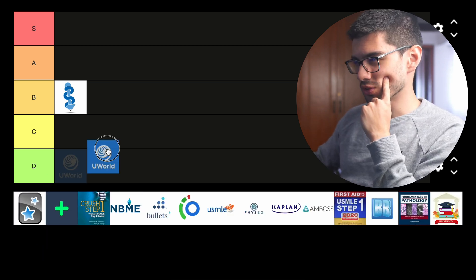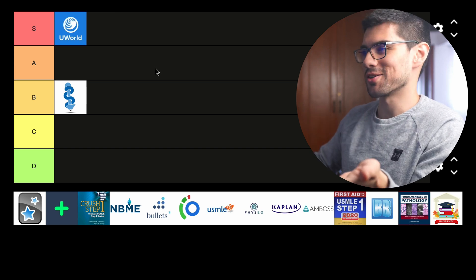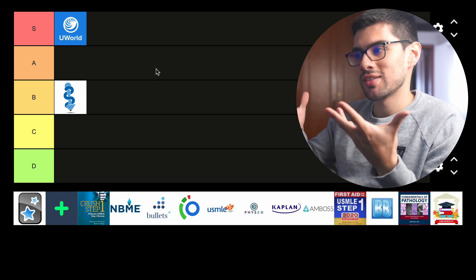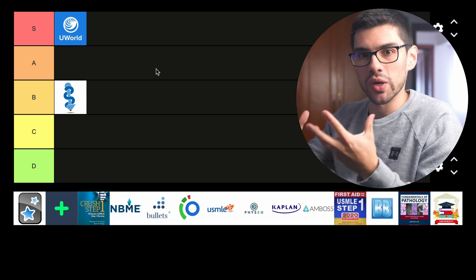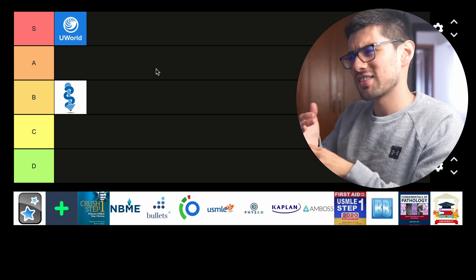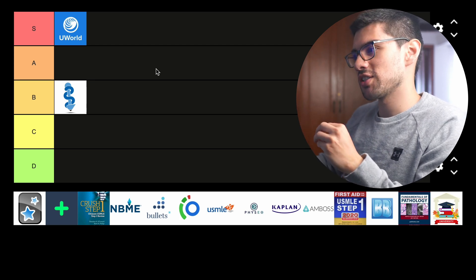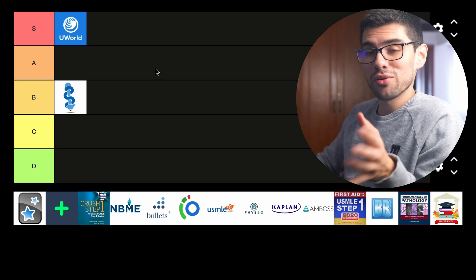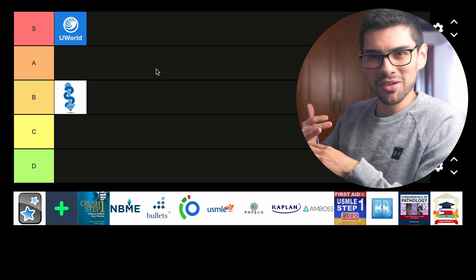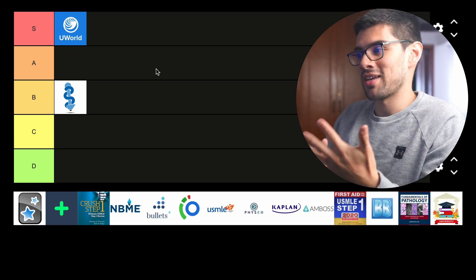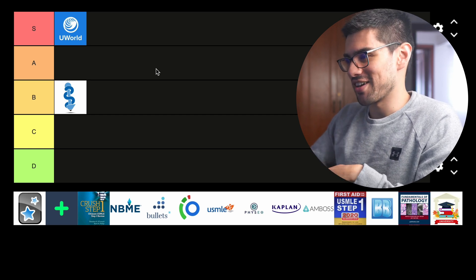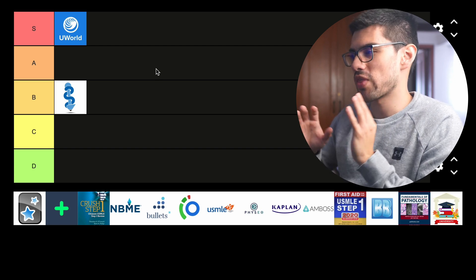Moving on, we have the infamous UWorld, and this of course goes in the S tier — no surprise here. It's a study resource that uses the best learning technique we know, the testing effect, and it uses this technique in the best way possible: the most similar questions to the actual exam, the best concise yet comprehensive explanations, and overall the best quality possible. My only issue is that I've given them more than $1,500, and in return I'm constantly reminded of how stupid I am — but besides that, they are amazing. Hands down one of the best study tools, without a doubt.